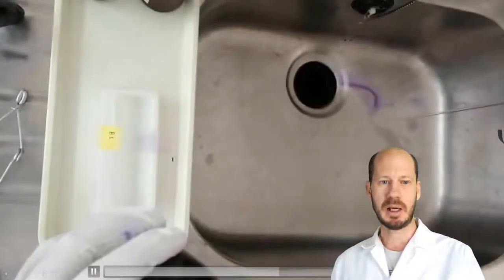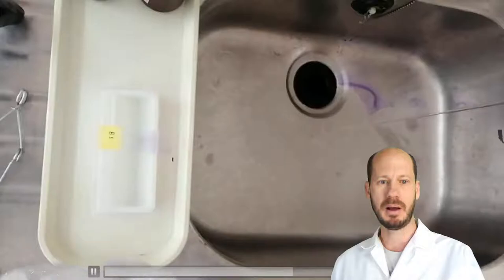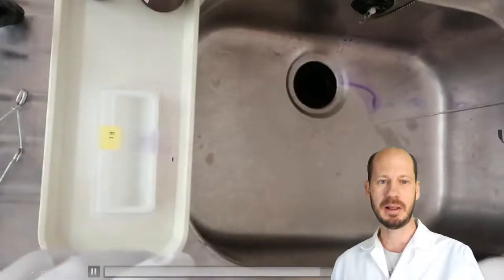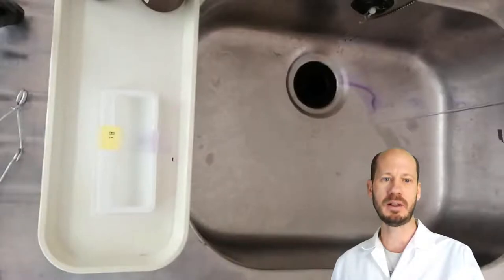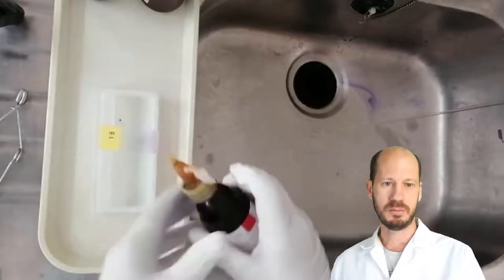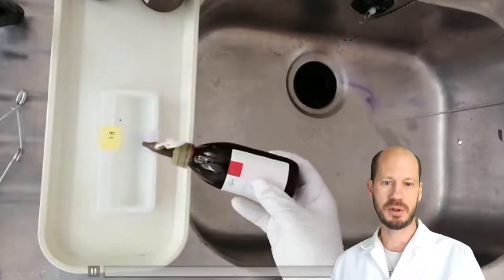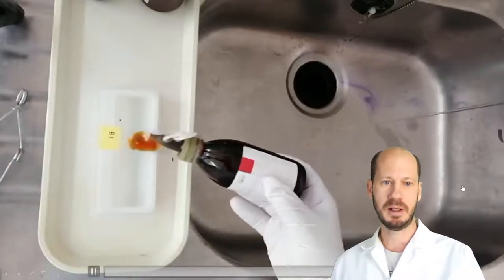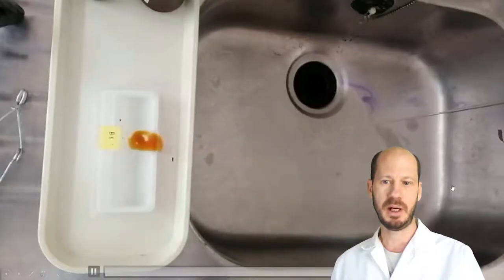Next step is iodine. Iodine will complex the crystal violet and make it that will be harder for the crystal violet to be removed from the cells. And there you go. Place some crystal violet on top of that and leave it for a few minutes.